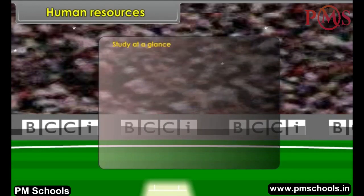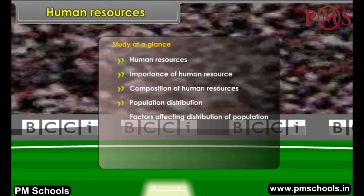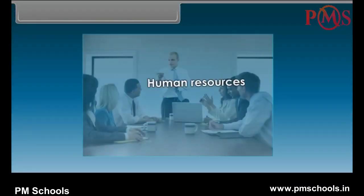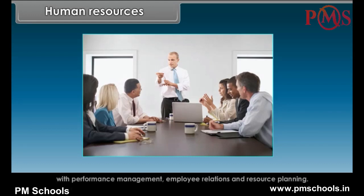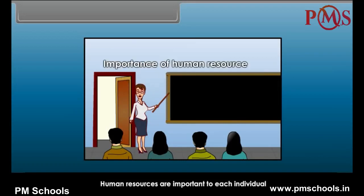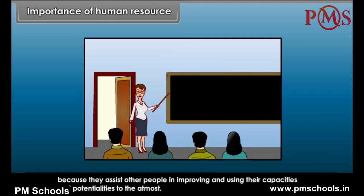Study at a glance: Human Resource, Importance of Human Resource, Composition of Human Resources, Population Distribution, Factors Affecting Distribution of Population, Spatial Distribution of Population, Density of Population, and Population Change. Human Resource is a term which describes the combination of traditionally administrative personal functions with performance management, employee relations and resource plans.